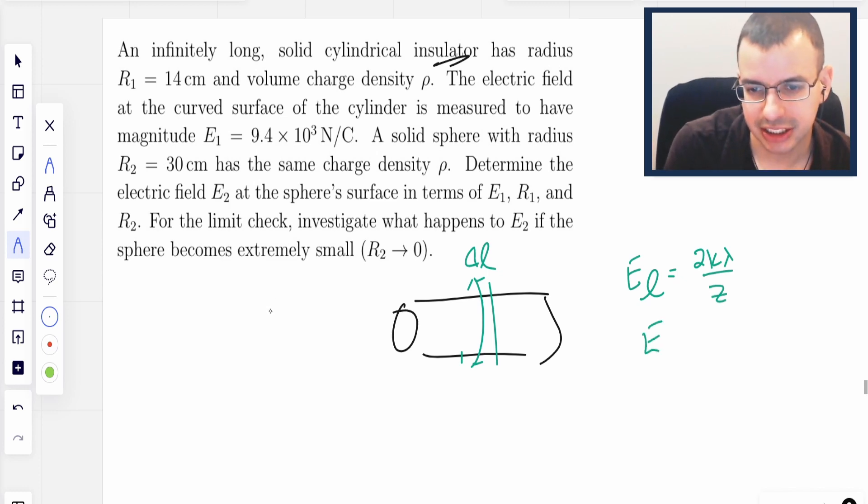I'm going to rewrite that as E1, because we know that the electric field due to the cylinder is E1 equals 2K lambda over Z.